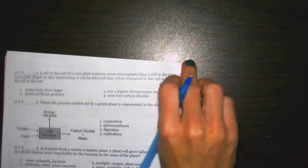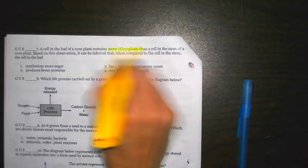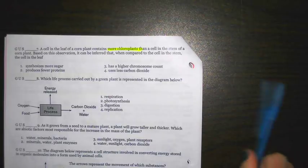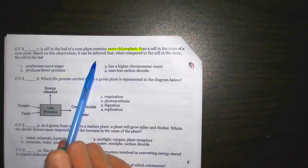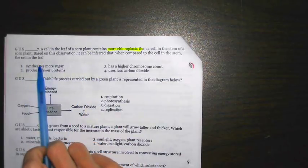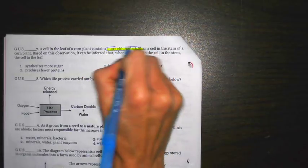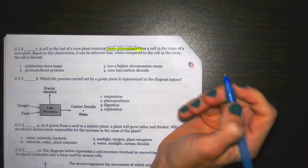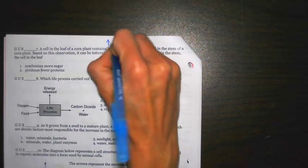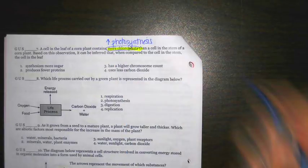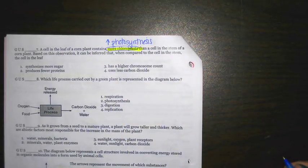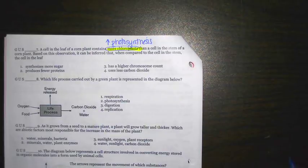A cell in a leaf of a corn plant contains many chloroplasts than a cell in the stem of a corn plant. Based on the observation, it can be inferred that when compared to a cell of a stem, the cell in a leaf. So here we have more chloroplasts. You have to think, what process is occurring inside of the chloroplasts? The process that is occurring inside of the chloroplasts is going to be photosynthesis. So if you have more chloroplasts, most likely you're going to have more photosynthesis occurring. Go through each question now.